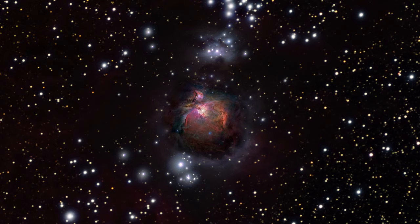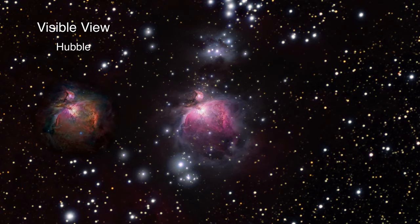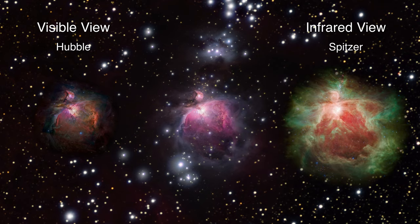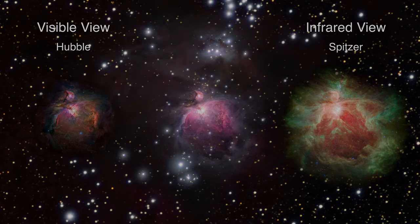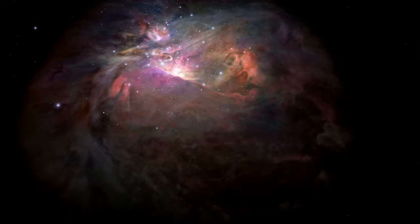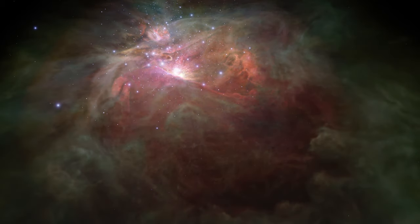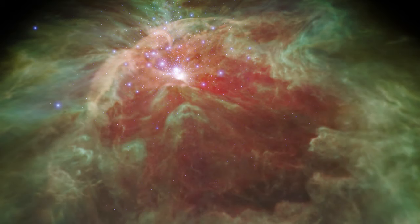The visible light observations from the Hubble Space Telescope and the infrared light observations from the Spitzer Space Telescope are compared first in two-dimensional images and then in three-dimensional models. As the camera flies into the star-forming region, the sequence crossfades back and forth between the visible and infrared views.